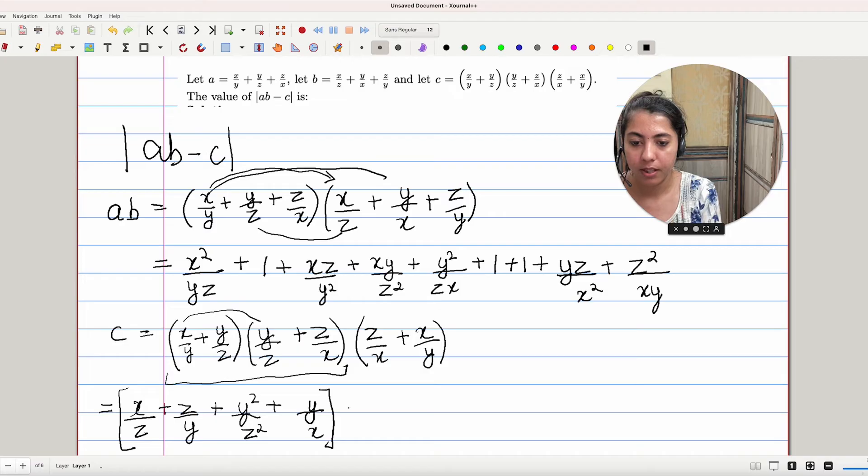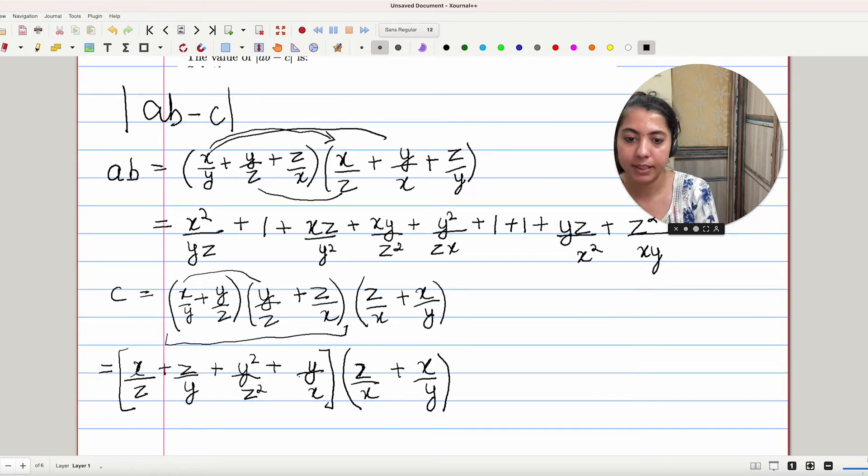Now this expression is to be multiplied by (Z/X + X/Y). Let's calculate. That will be (X/Z) times (Z/X), that will be 1.